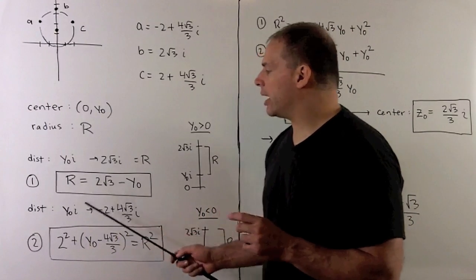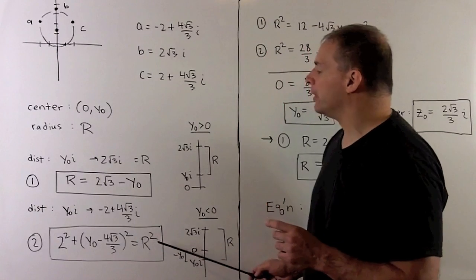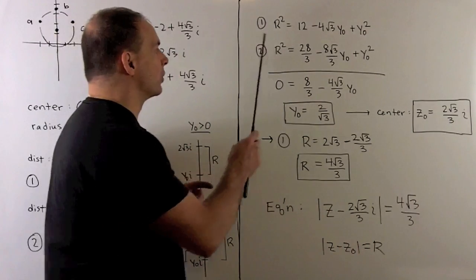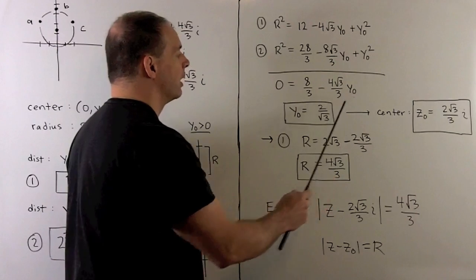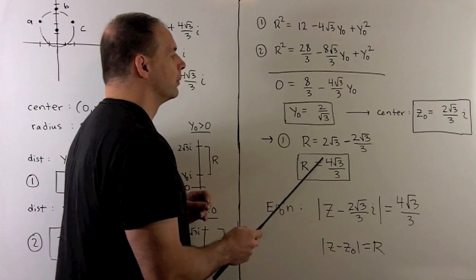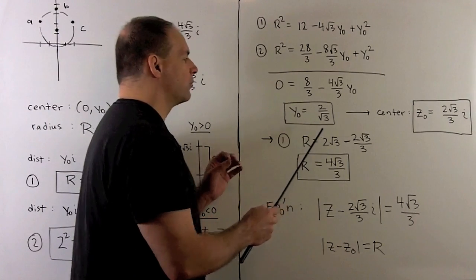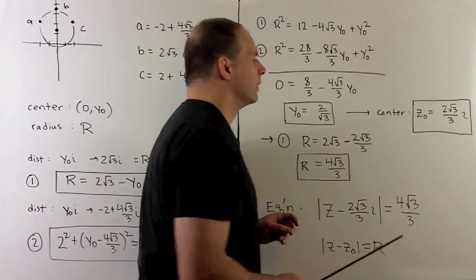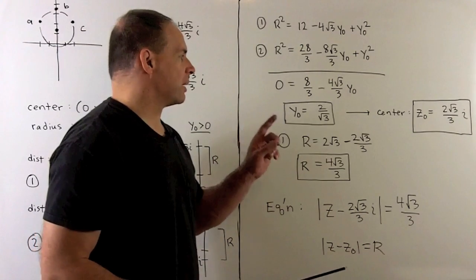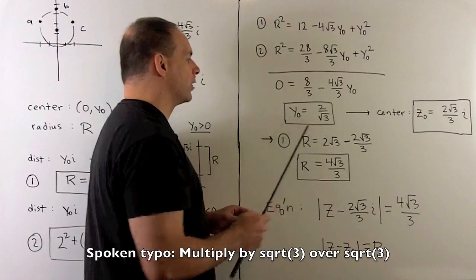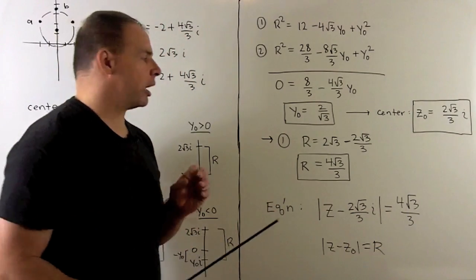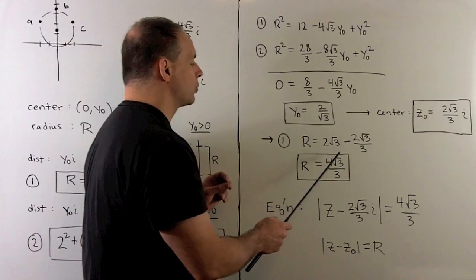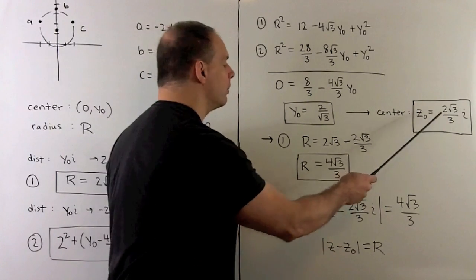We take equation 1, square both sides. For equation 2, we expand out, then take the difference to eliminate the R-squared and y₀-squared terms. We get that y₀ is equal to 2 over √3. To put this back in complex form, the real part is 0, so the center is (2√3/3)i, multiplying by √3/3 to rationalize the denominator. Going back to equation 1, R = 2√3 − 2√3/3, which gives R = 4√3/3. That answers our question: we have our center and our radius.